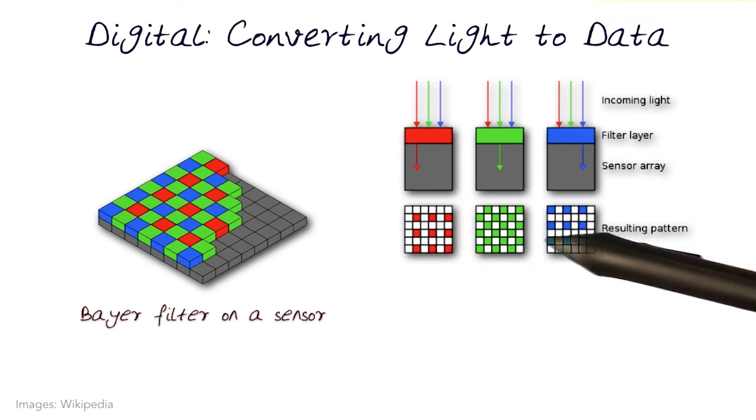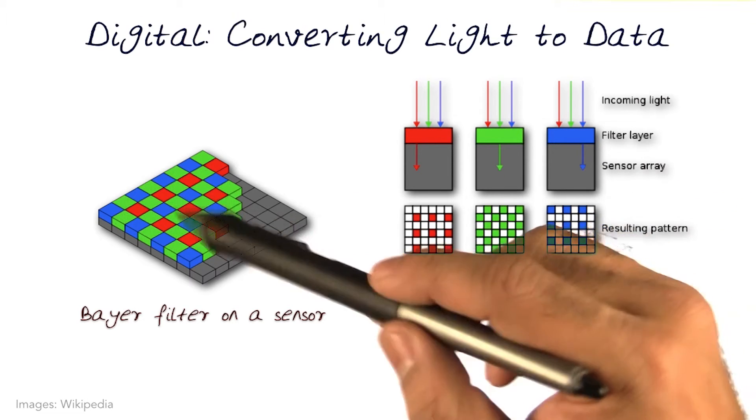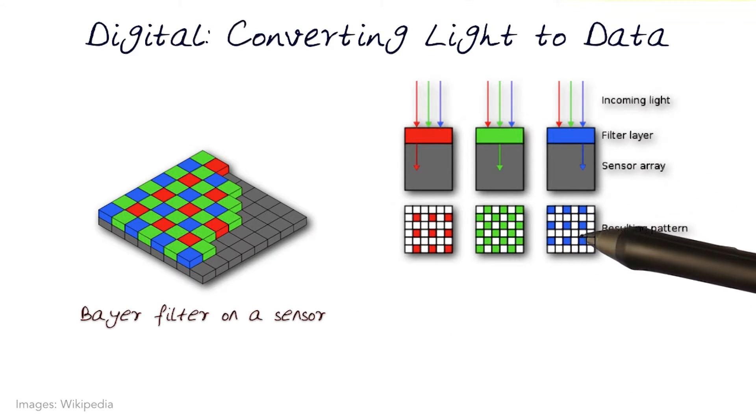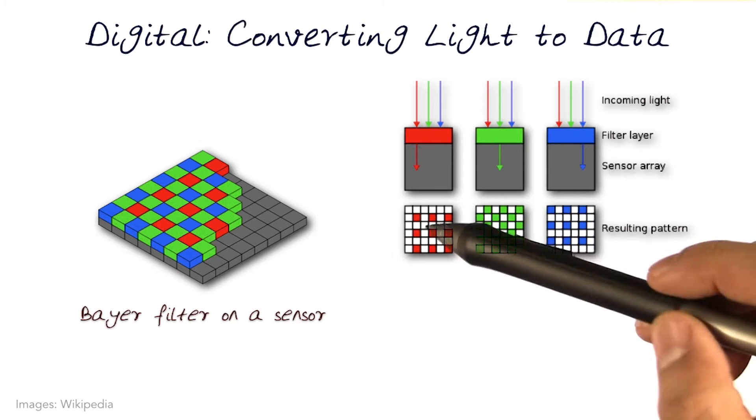So in essence, you create three different patterns. Of course, the photodiodes then store the intensity for each and every one of them. But this coding scheme pretty much lets us know which one of the bins is actually blue, green, or red.